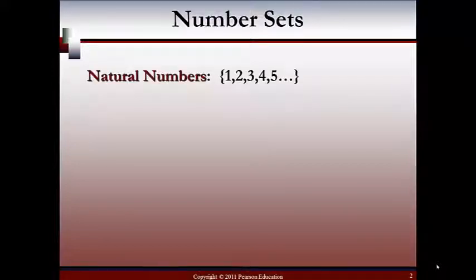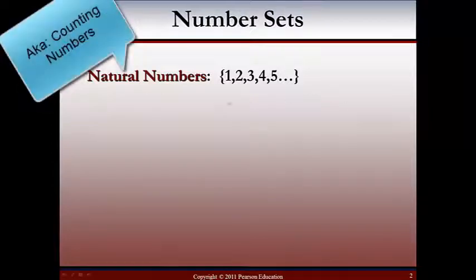The first set of numbers we're going to talk about are the natural numbers. These are 1, 2, 3, 4, 5, and these three little dots mean that it goes on forever. So it means 6, 7, and 8 are also considered natural numbers. Sometimes you'll hear natural numbers referred to as the counting numbers. So it's just another name for the same set of numbers.